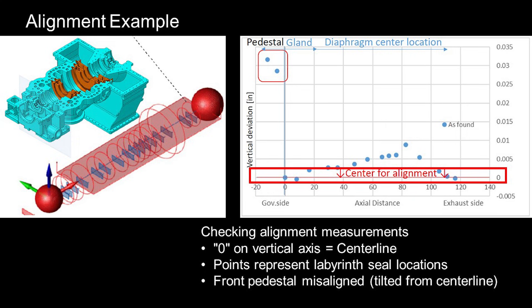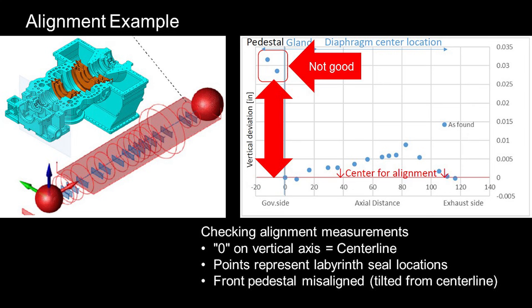Here is an example of how to check alignment data. The vertical axis, zero, represents the alignment centerline, and each dot represents the measured locations. This graph highlights that the front pedestal is tilted, with data points significantly off from the centerline.